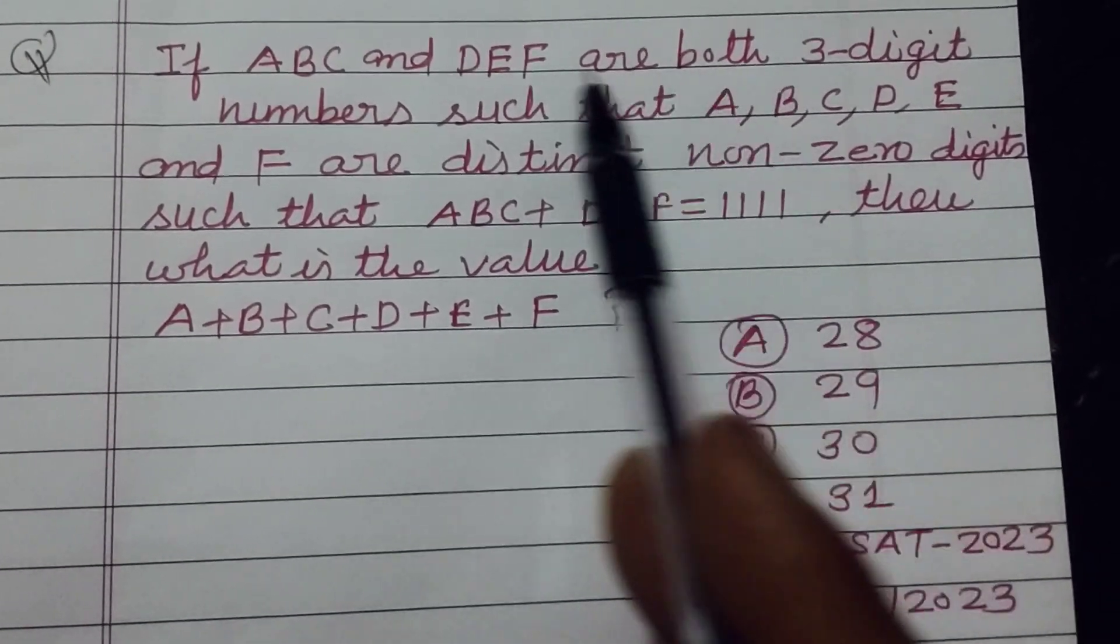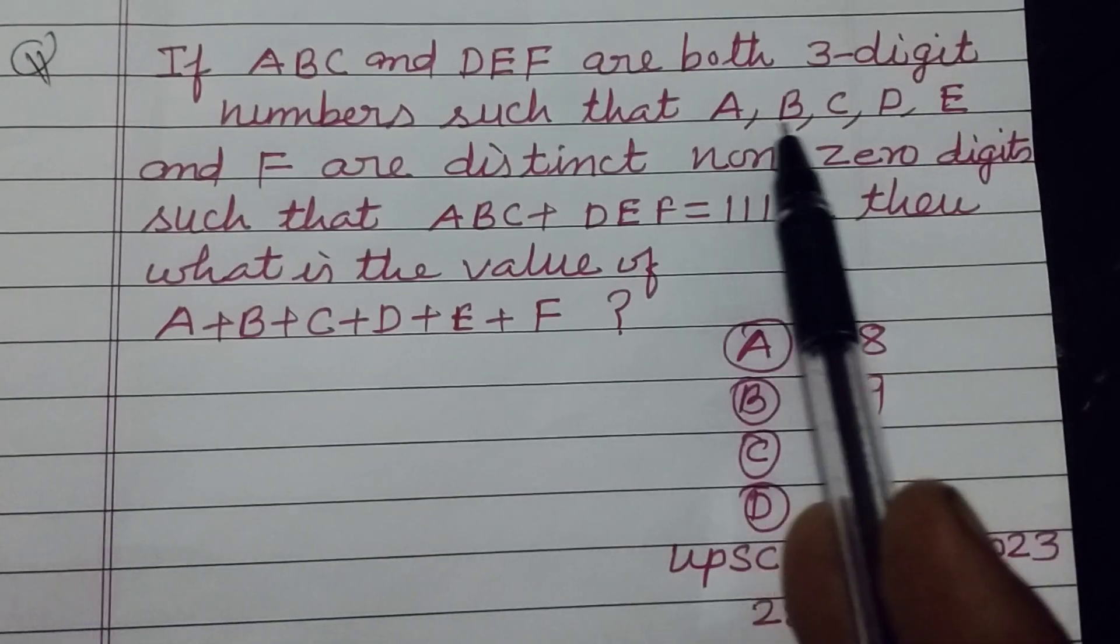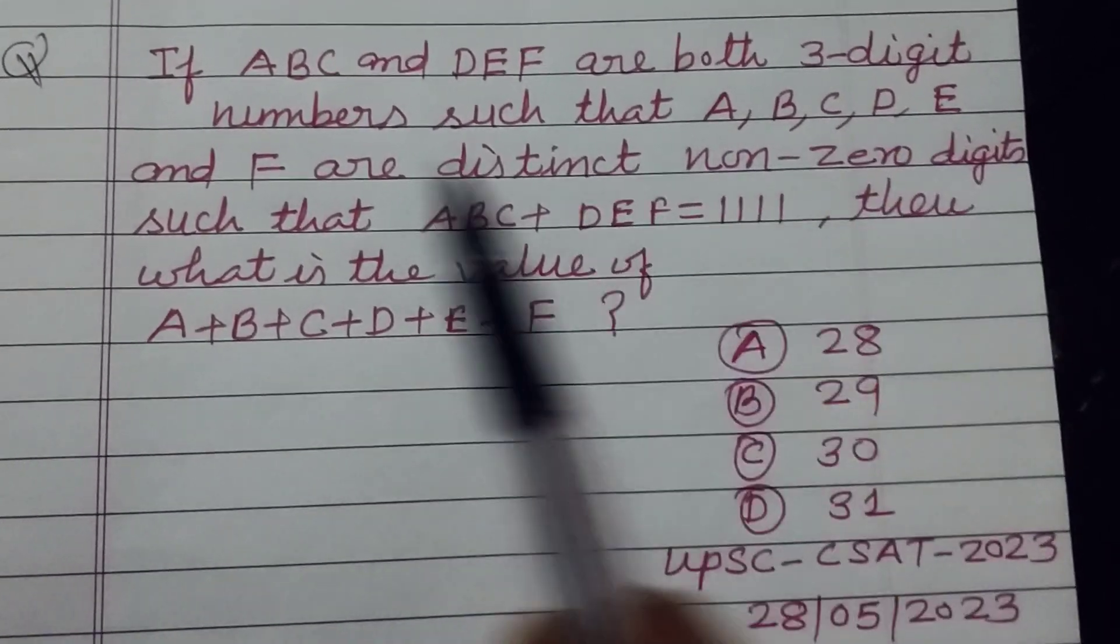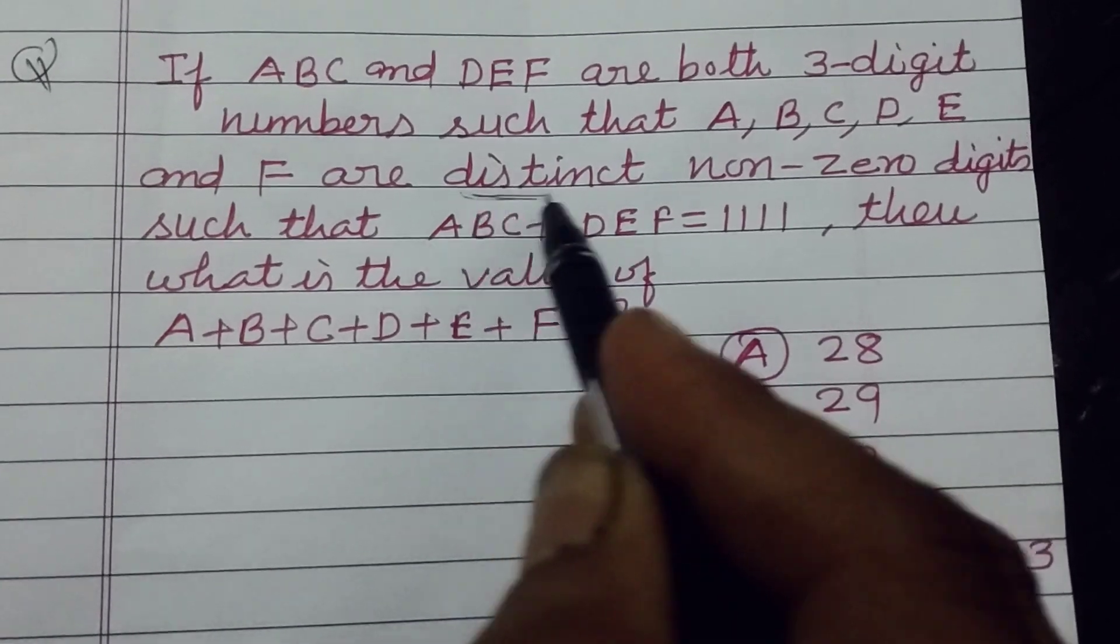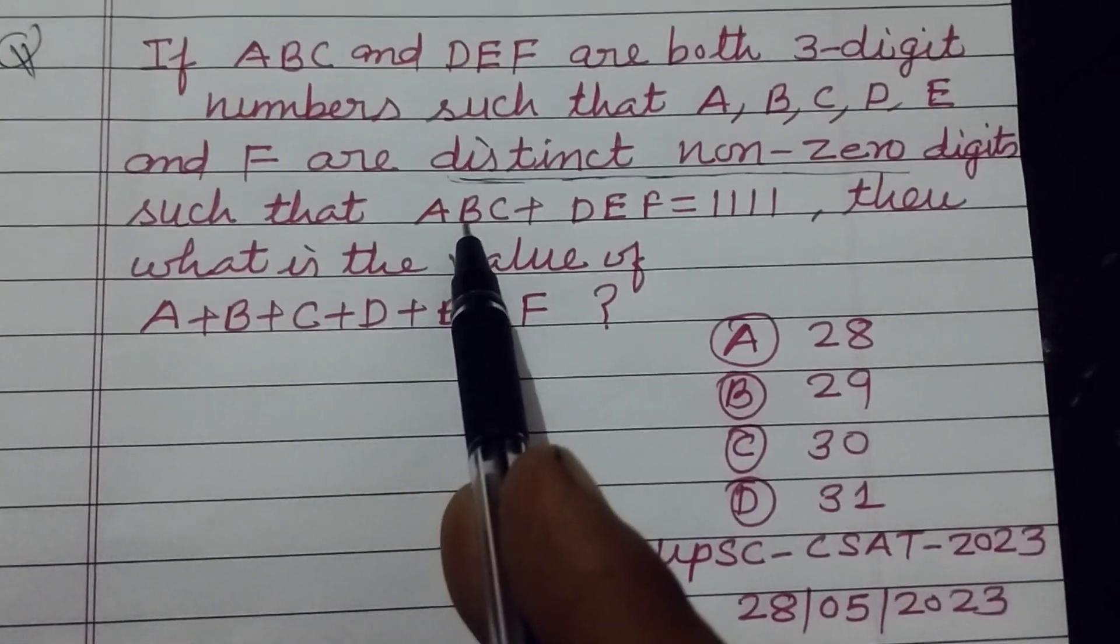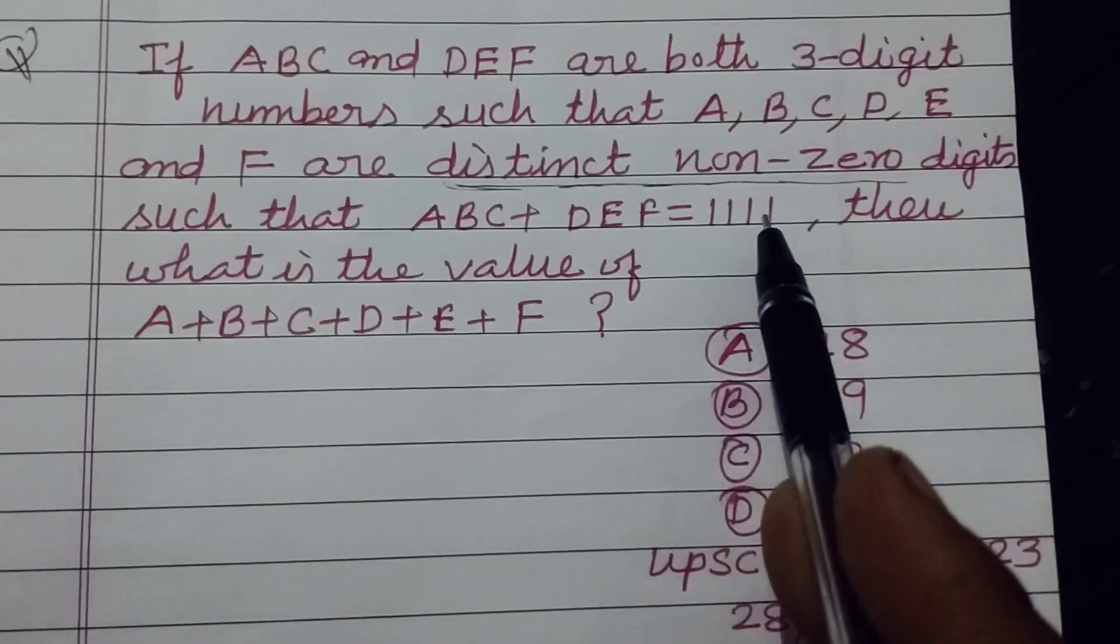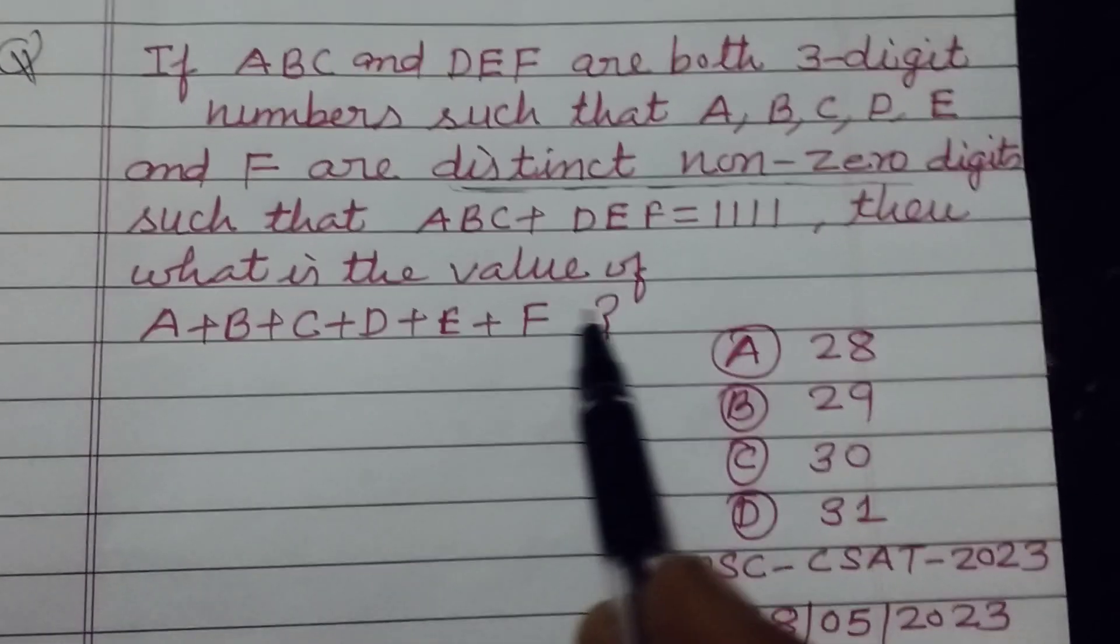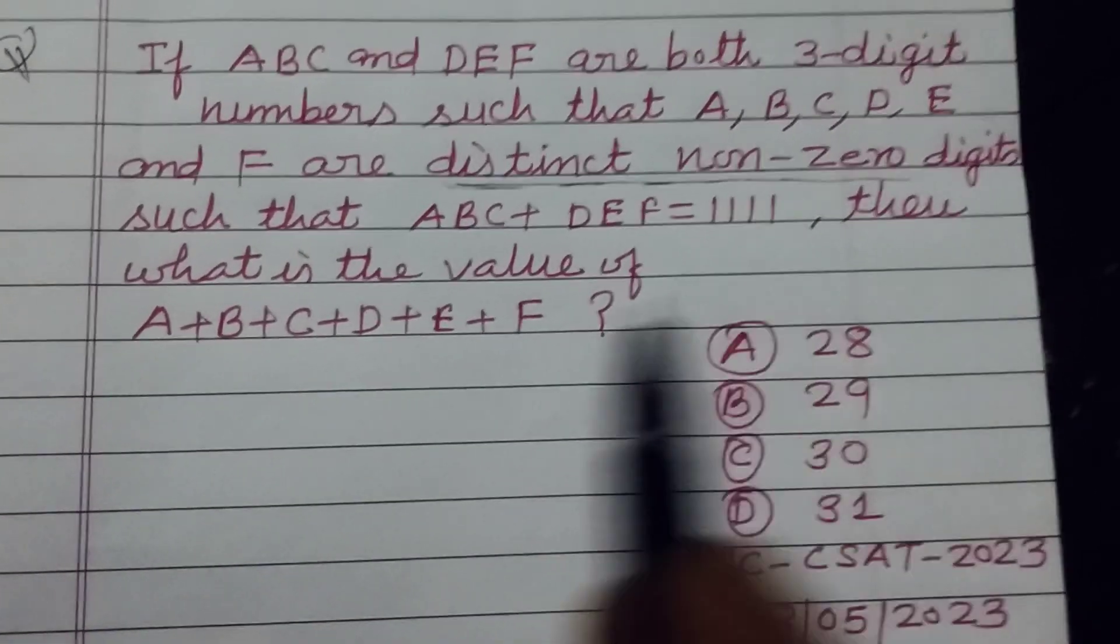If ABC and DEF are both three-digit numbers such that A, B, C, D, E, and F are distinct non-zero digits such that ABC plus DEF equals 1111, then what is the value of A plus B plus C plus D plus E plus F?